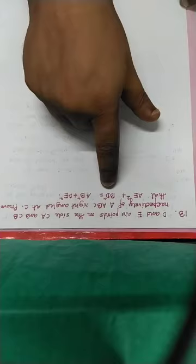Question number 13. Given: triangle ABC right angled at C, and D and E are two points on the sides CA and CB respectively. To prove: AE square plus BD square is equal to AB square plus DE square.